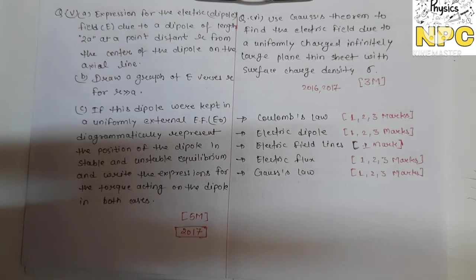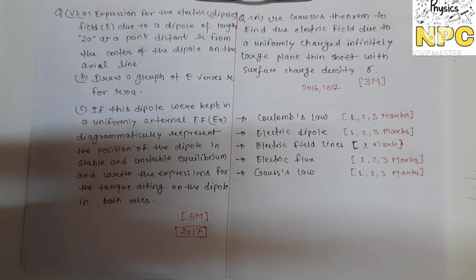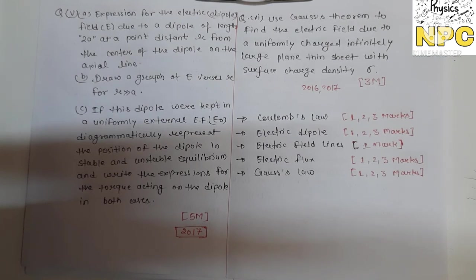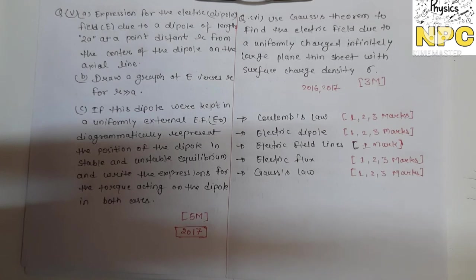Question number five is divided into parts A, B, and C. Part A: find the expression for the electric field due to a dipole of length 2a at a point distance r from the center on the axial line. Part B: draw an E versus R graph. Part C: if this dipole is kept in a uniform external field, represent the positions of stable and unstable equilibrium and write the expression for the torque acting on the dipole in both cases.